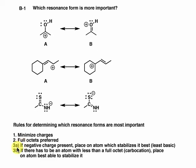The corollary to this with a positive charge is: if there is an atom with less than a full octet — for example, a carbocation — place that atom with less than a full octet on the atom best able to stabilize having less than a full octet.